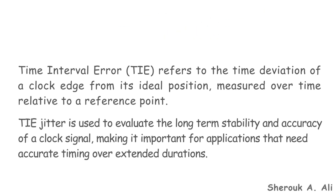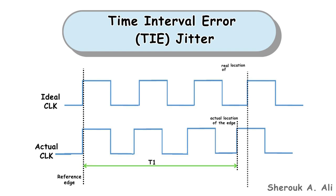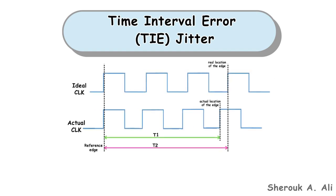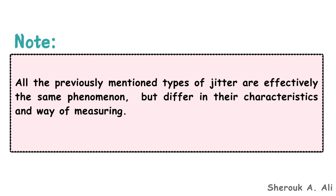Let's explain with an example. As shown, for a specific cycle, the time T1 measured between a reference edge and the clock edge of the actual clock differs from time T2 measured between a reference edge and the clock edge of the ideal clock. This time deviation of a clock edge from its ideal position, measured relative to a reference point, results in TIE jitter equals T2 minus T1. Note that all previously mentioned types of jitter are effectively the same phenomenon, but differ in their characteristics and way of measuring.